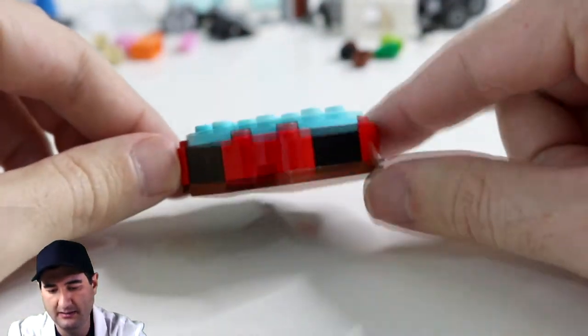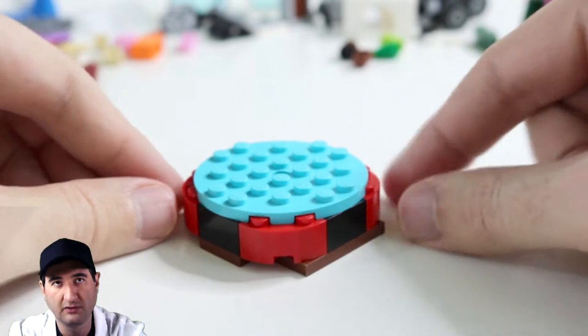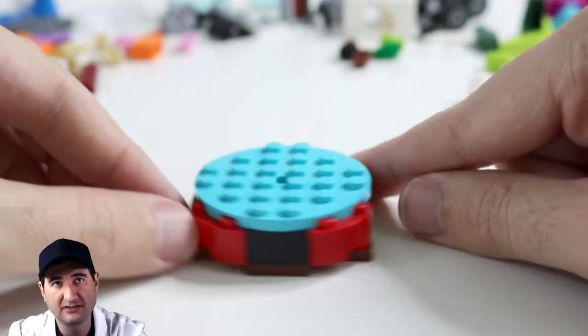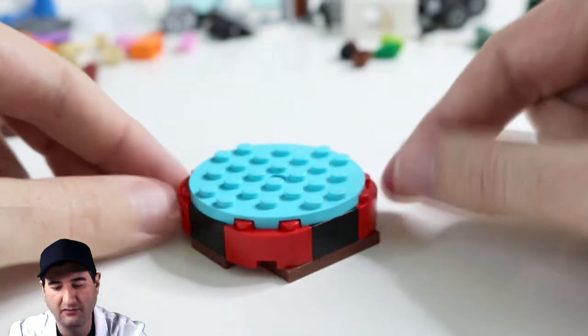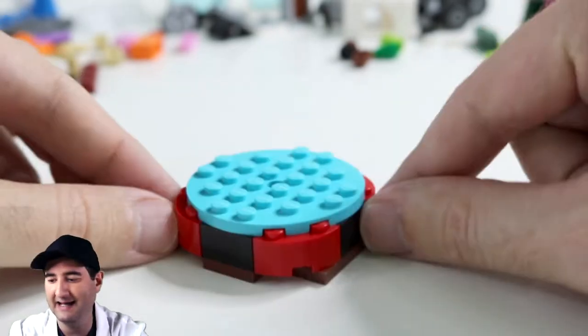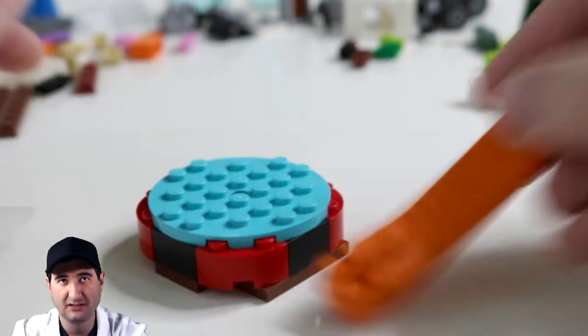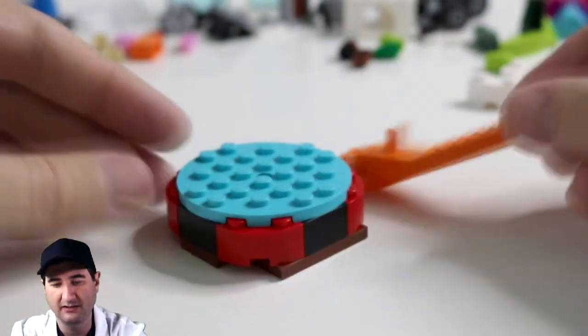And I think it turned out really pretty good. It looks like a puck. It's definitely got the right shape, definitely the right size. And maybe I can use this brick breaker as my little hockey stick, huh?